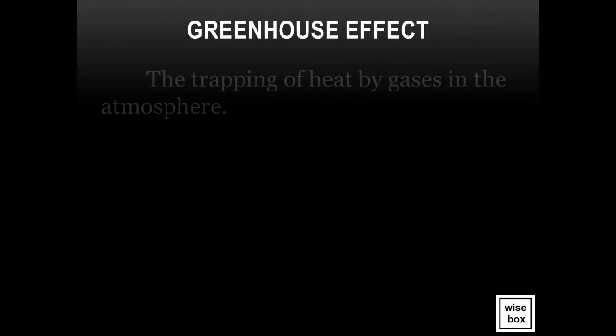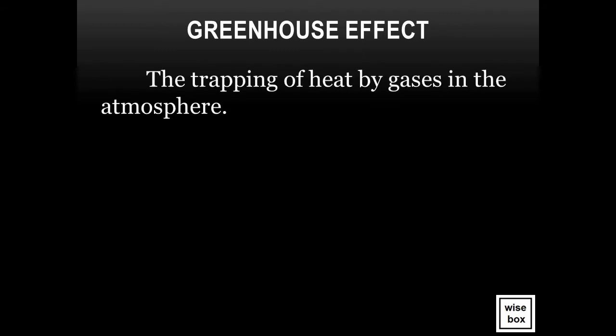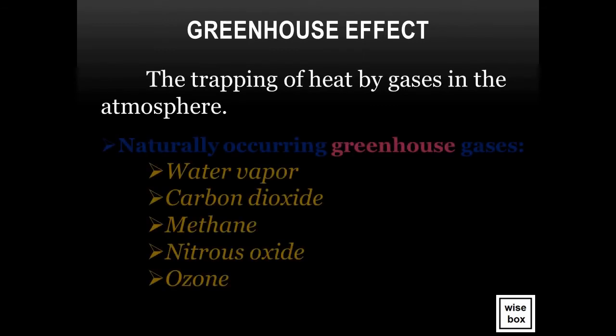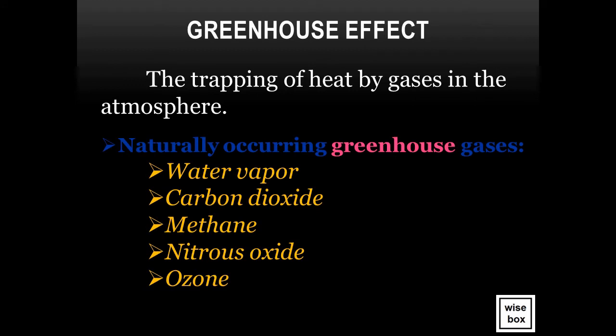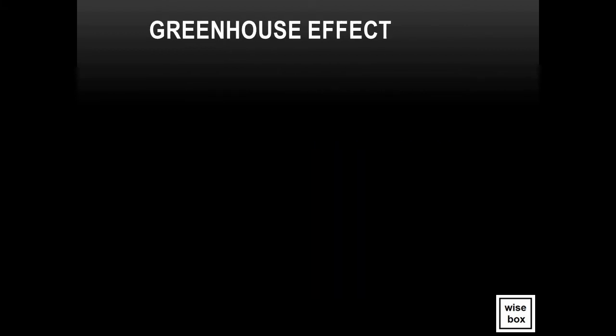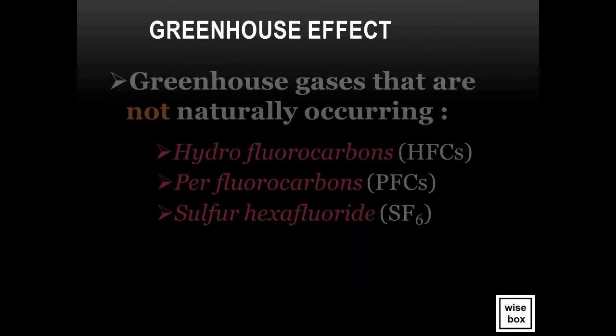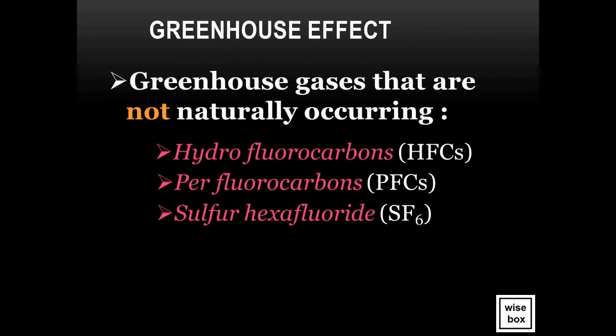Greenhouse Effect is the trapping of heat by gases in the atmosphere. Naturally occurring greenhouse gases include water vapor, carbon dioxide, methane, nitrous oxide, and ozone. Greenhouse gases that are not naturally occurring are hydrofluorocarbons, perfluorocarbons, and sulfur hexafluoride.